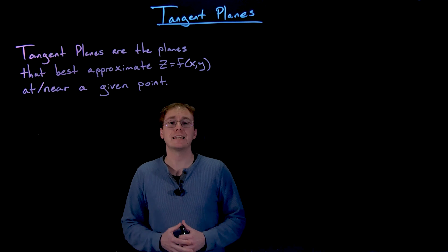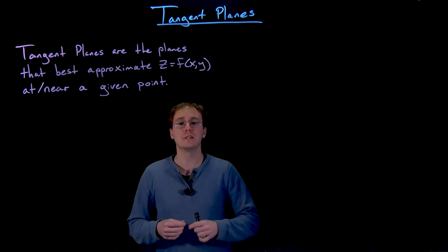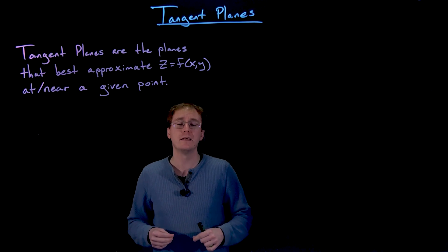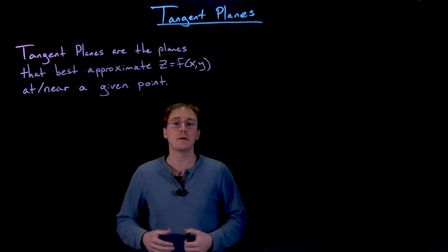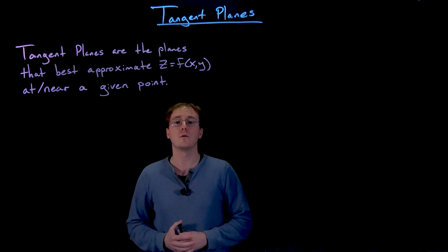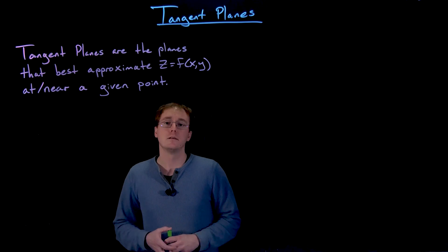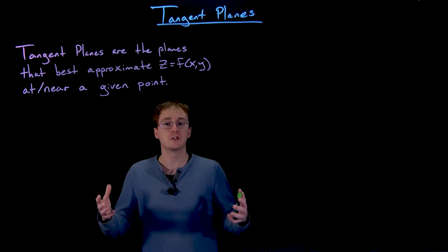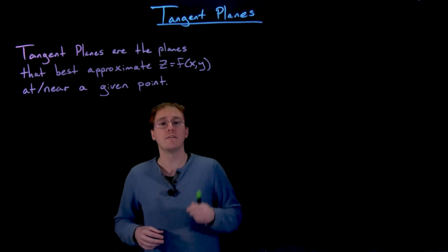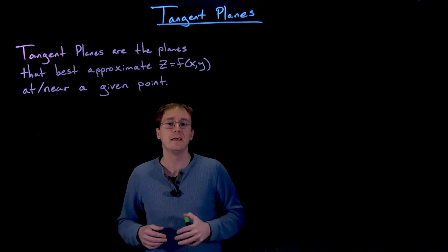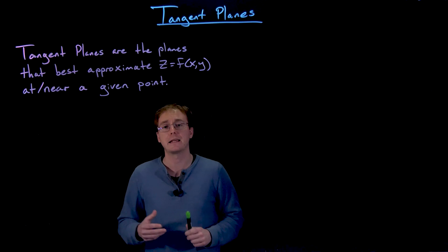In single variable calculus, tangent lines were a pretty big deal. The idea is if we had a nice differentiable function at some point, then we could zoom into the graph of our function at that point and our graph would eventually resemble a straight line. Our tangent line is essentially that straight line that best resembles our function at a given point. Now we're working with two-variable functions and we have a three-dimensional version of that same scenario. We have a nice differentiable three-dimensional surface, we pick a point, and if we zoom in closer and closer to that point, eventually it appears our surface is flat, and that flat surface can be approximated by a plane — that is our tangent plane.